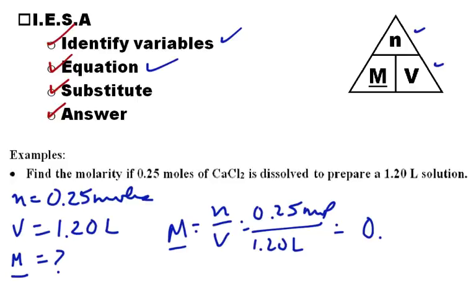We find out that that comes out to be 0.208, and the answer would be molar. So the molarity symbol is our variable, and it's also our unit. So we say we have a 0.208 molar solution.